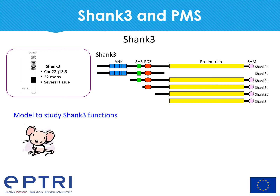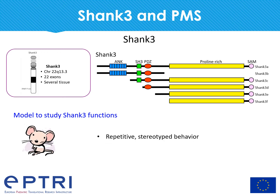We started analyzing the behavior of these mice and confirmed that SHANK3 deletion causes ASD-like behavior. The mice show repetitive stereotyped behavior, reduced sociability, and a strong impairment in spatial learning and memory.